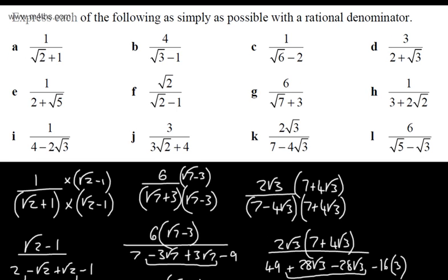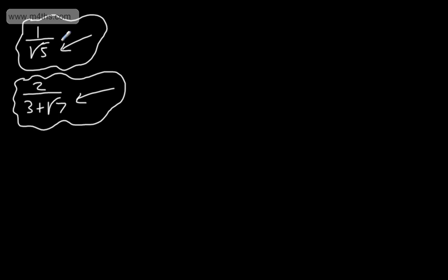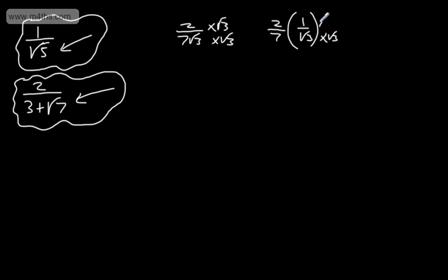To recap: these are fractions with irrational denominators and we look to rationalize the denominator. If we have a single surd in the denominator — for example 2 over 7 root 3 — we simply multiply numerator and denominator by the root 3. If we have an addition or subtraction between two values, we multiply numerator and denominator by the conjugate, creating the difference of two squares. That's rationalizing the denominators of fractions.